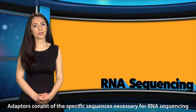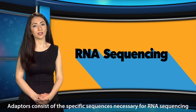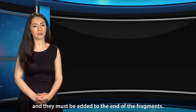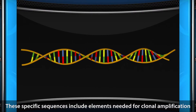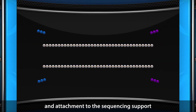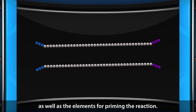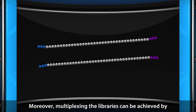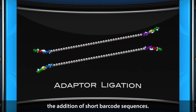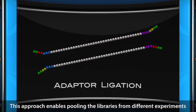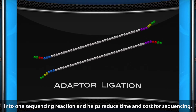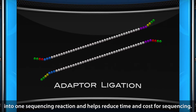Adapters consist of specific sequences necessary for RNA sequencing and they must be added to the ends of the fragments. These specific sequences include elements needed for clonal amplification and attachment to the sequencing support, as well as elements for priming the reaction. Moreover, multiplexing the libraries can be achieved by addition of short barcode sequences. This approach enables pooling the libraries from different experiments into one sequencing reaction and helps reduce time and cost for sequencing.